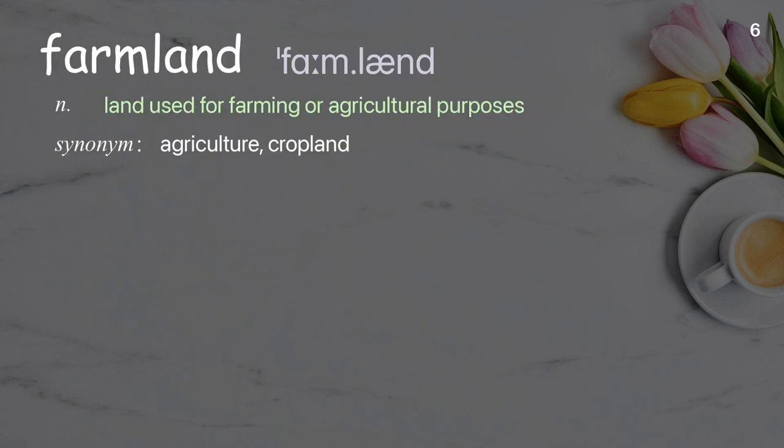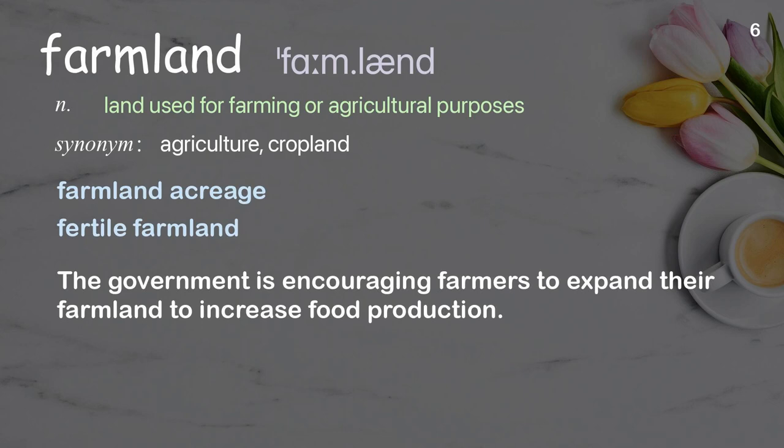Farmland: Land used for farming or agricultural purposes. Examples: Farmland acreage, fertile farmland. The government is encouraging farmers to expand their farmland to increase food production.